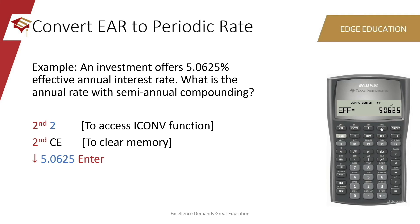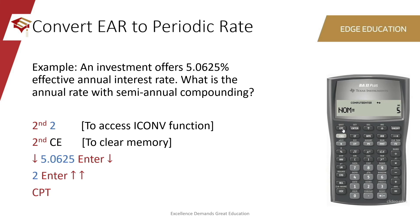Press the down arrow key until you observe C/Y. Here, we will type the compounding frequency with which we want the periodic rate. Since the question is asking us for a semi-annual rate, type 2 and press the enter button on top. Then press the up arrow key twice until you reach nominal. In order to get the final result, press the CPT button. Notice you observe 5%, which is similar to the previous example we had worked with.